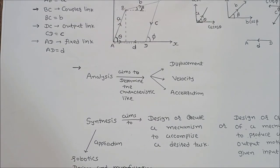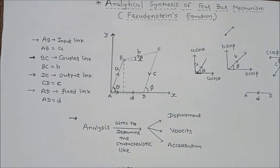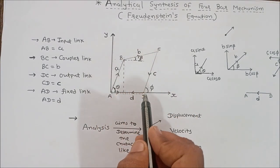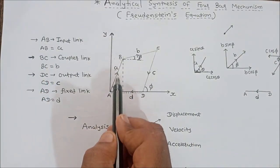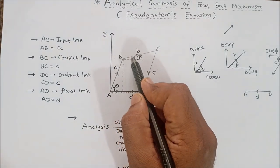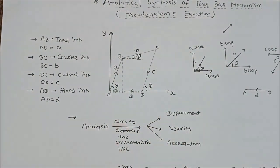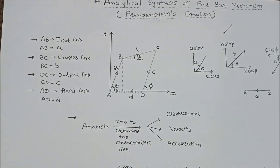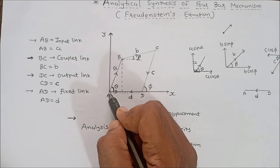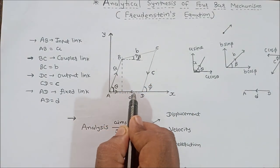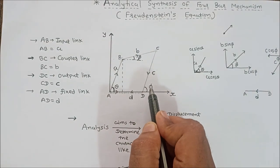In this derivation, the length values of links A, B, C, and D can be determined. We consider a four-bar mechanism A, B, C, D as shown in figure, in which AB is the input link with length small a; BC is the coupler link with length small b; DC is the output link with length small c; and AD is the fixed link with length small d. Link AB makes angle theta with the x-axis, link BC makes angle beta with the x-axis, and link CD makes angle phi with the x-axis.